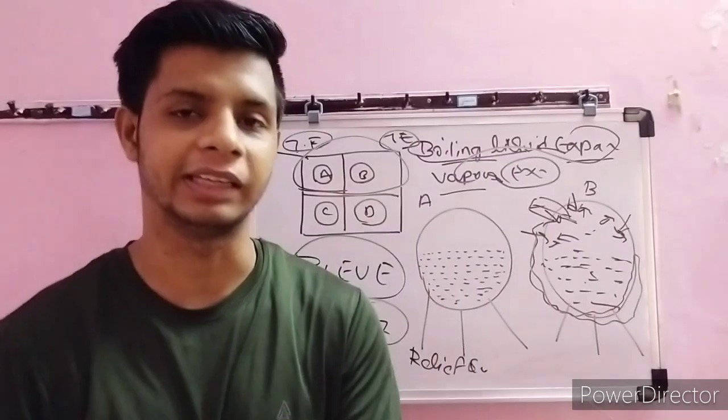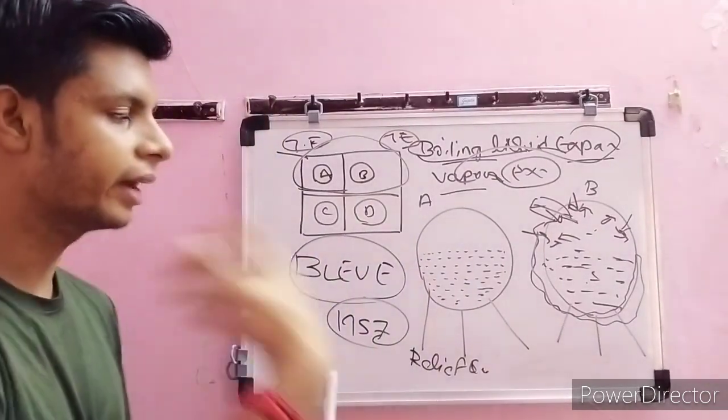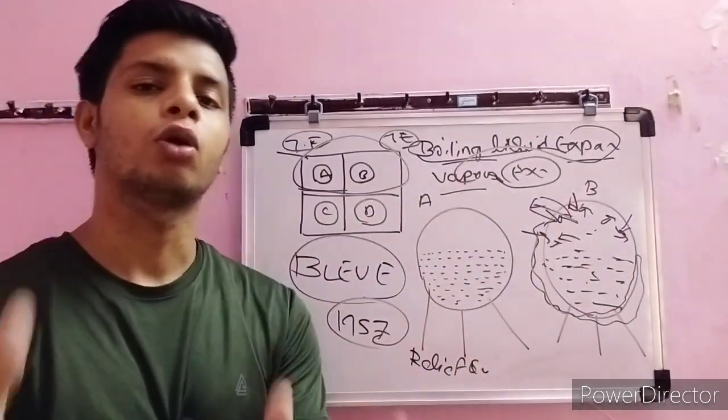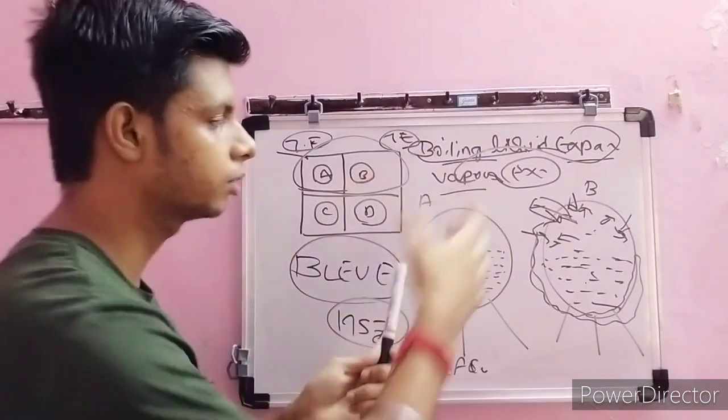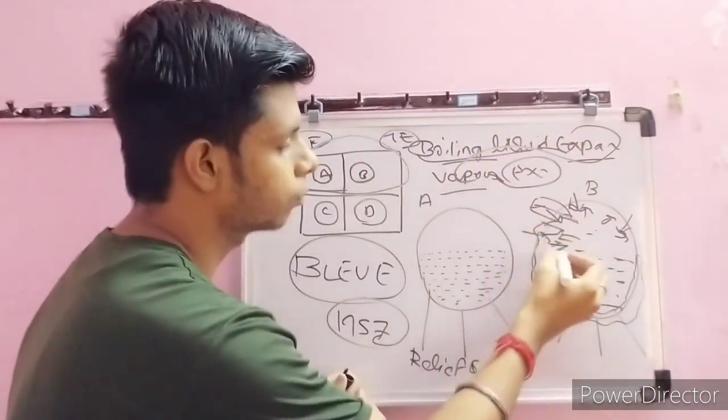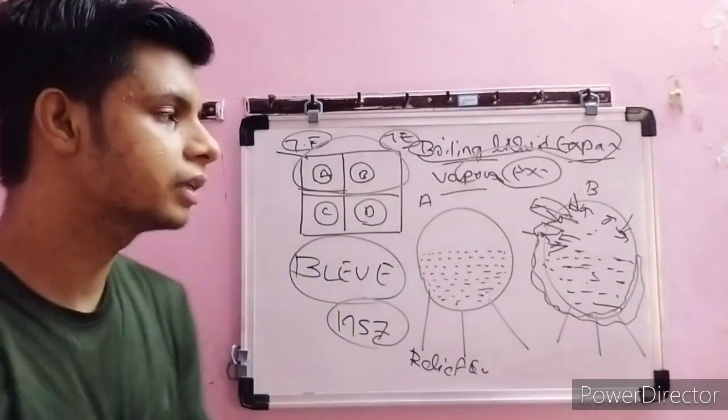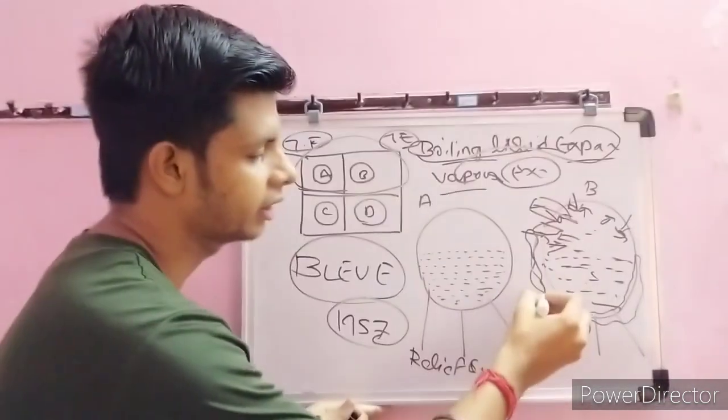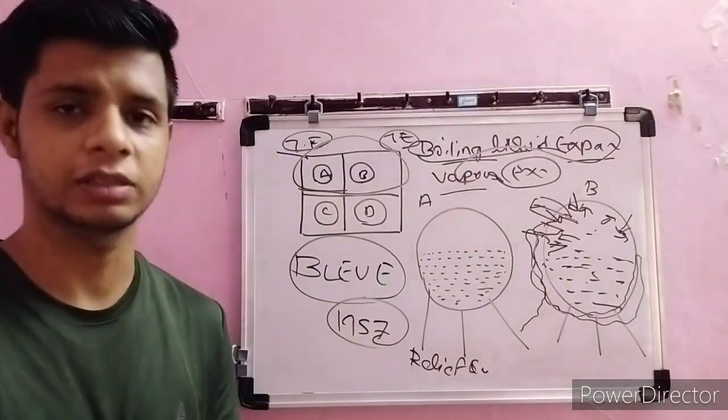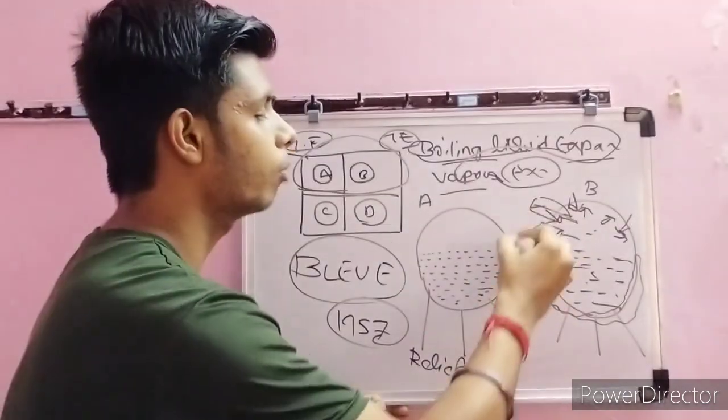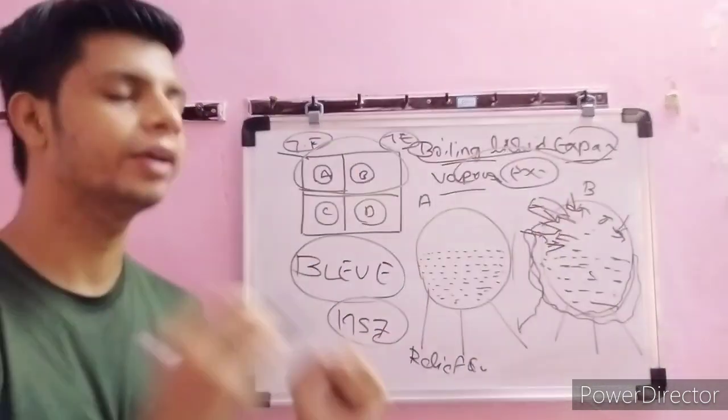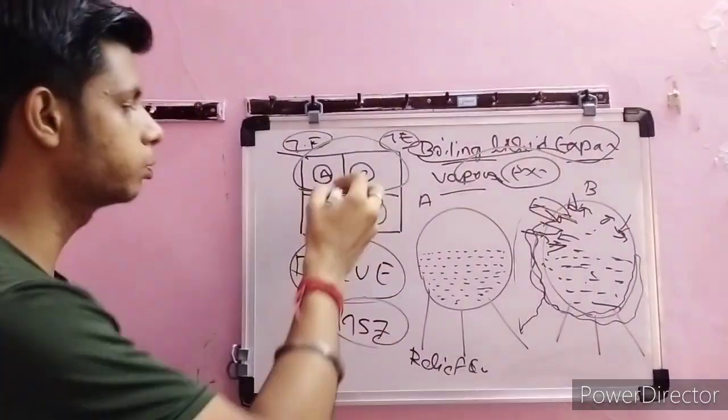That will be called BLEVE. One more thing can happen: they will not blast here, but will just develop some cracks inside that particular tank. When cracks develop, they will form a vapor cloud. They'll go downwards depending upon their vapor density and form a vapor cloud.